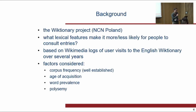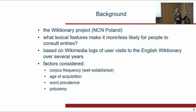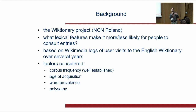As for the background, the context is a dictionary project financed by the NCN in Poland, where our primary question is what lexical features make it more or less likely for people to consult dictionary entries. We base our analyses on Wikimedia logs of user visits to the English dictionary over several years, considering corpus frequency, age of acquisition, word prevalence, and polysemy — whether a word is polysemous or not.